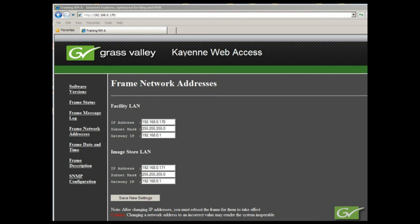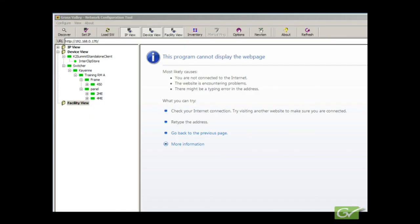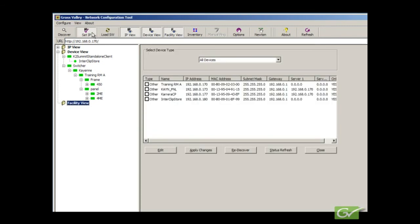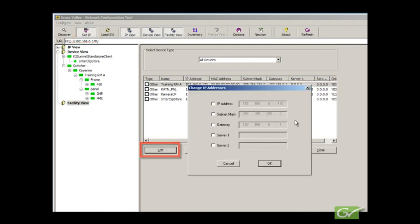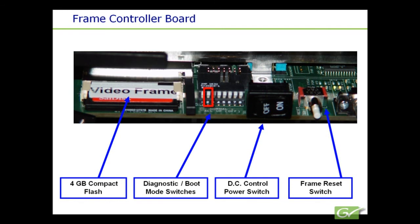If the frame IP number is not known, there are two options to set the IP. One, use the NetConfig tool supplied with the system software to connect to the Cayenne frame, and use Set IP to be able to directly edit the frame IP numbers. Or two, set the frame boot switch number two to on and reboot the frame. This switch is found on the frame processor board. This will set the frame temporarily to the default IP number so the web browser can connect and the IP numbers set as desired. The default IP number for the frame is 192.168.0.170.